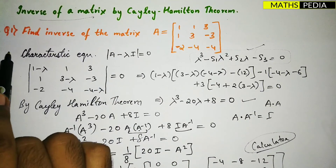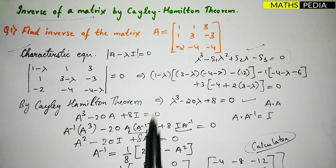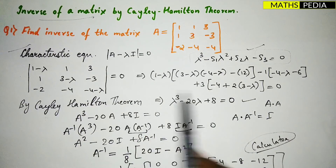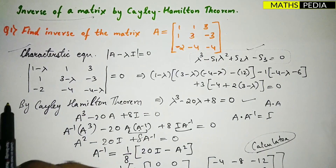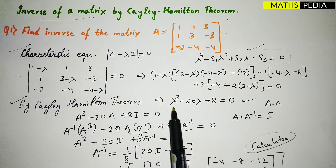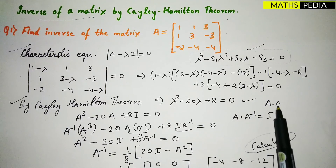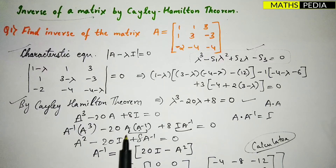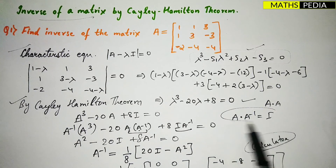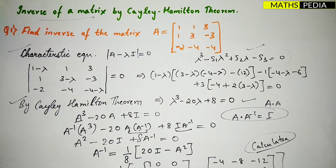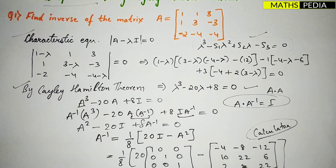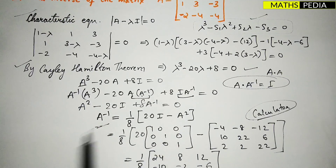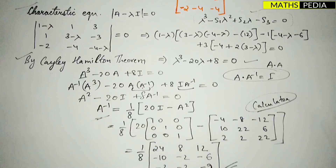To summarize: the first step is to find the characteristic equation (there are two methods, either works). Then by the Cayley-Hamilton theorem, replace λ with A. Since we want A⁻¹, multiply through by A⁻¹ and use the property A·A⁻¹ = I. Keep A⁻¹ on one side and everything else on the other, then compute A² and subtract to get the final answer.